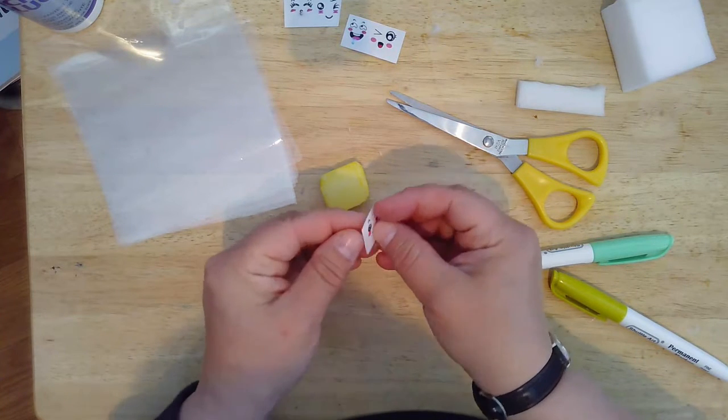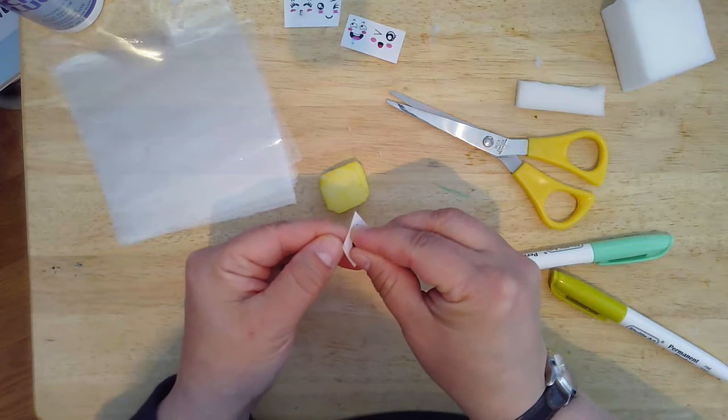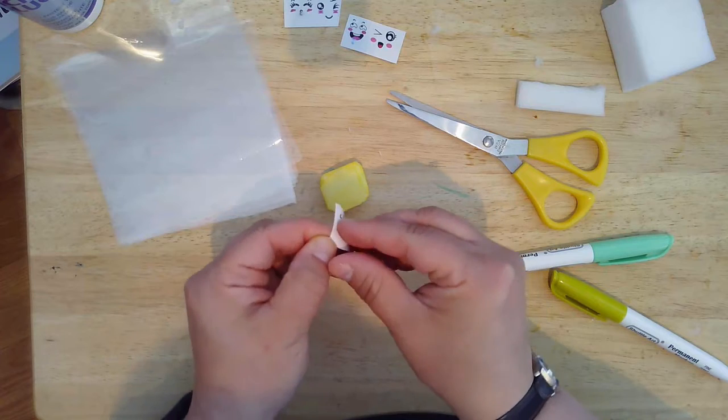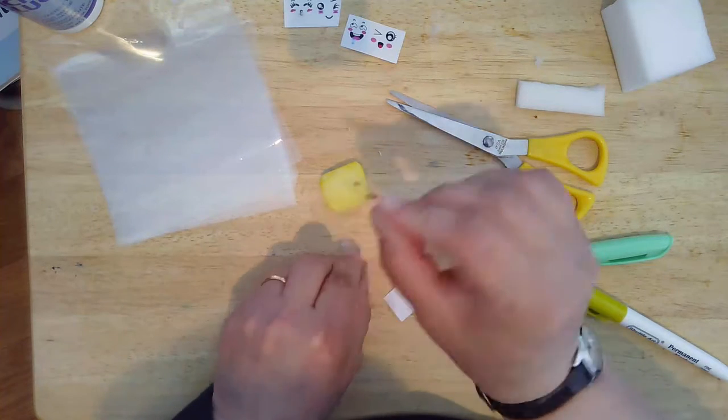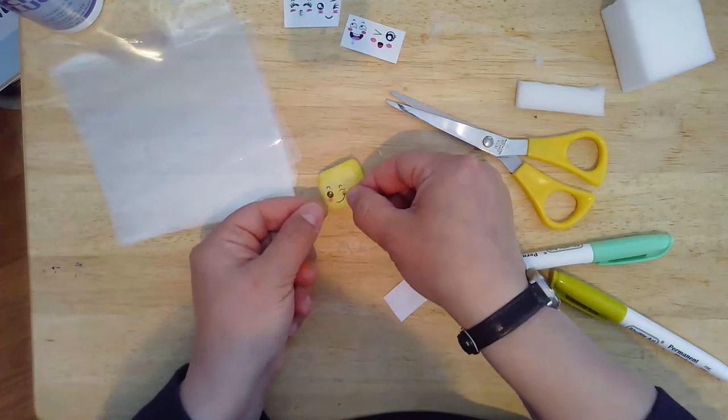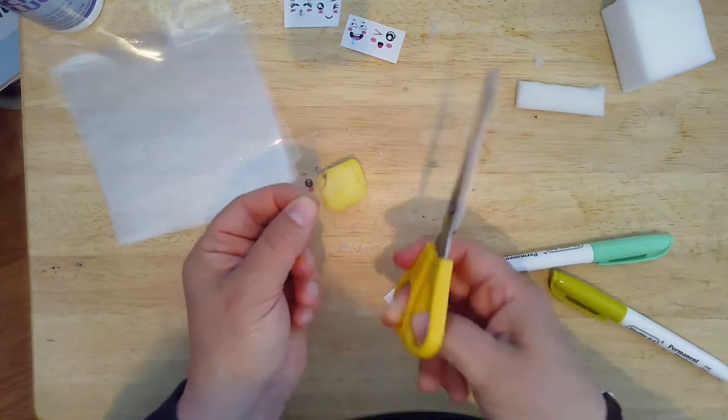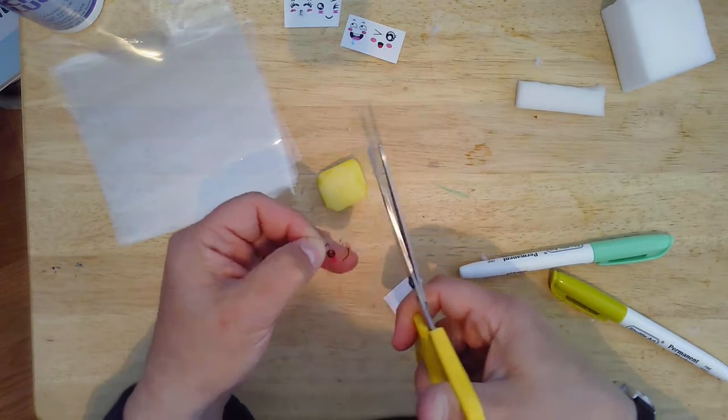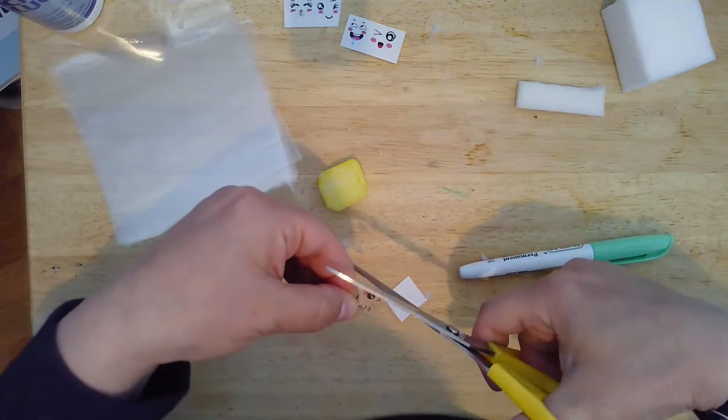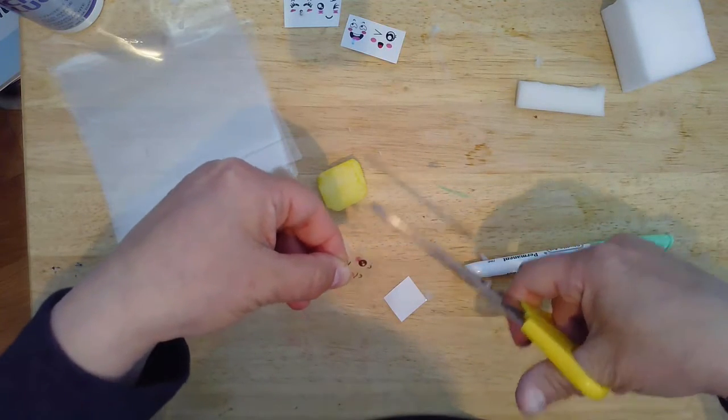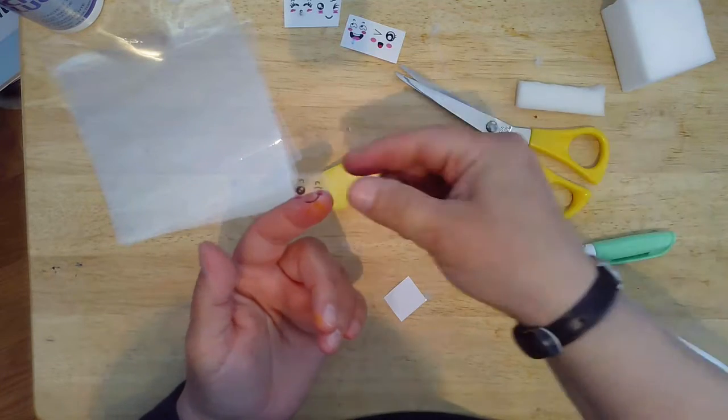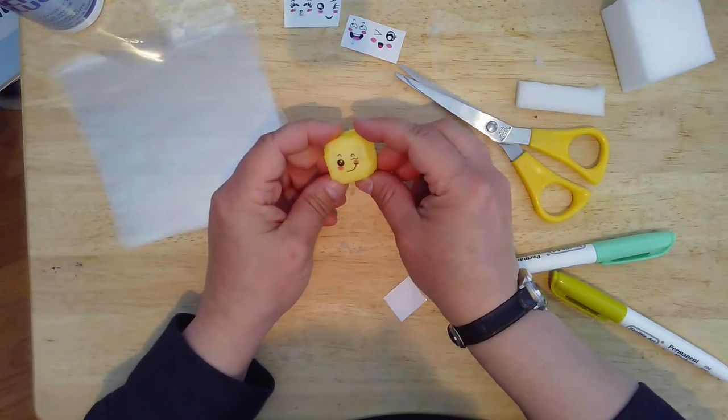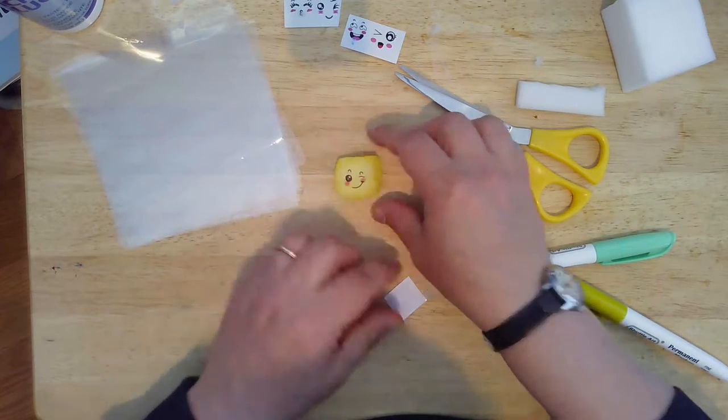So I might have to trim it to make sure it fits. I'm going to peel the backing away. It's a little tricky if you don't have fingernails. There we go. So I'm going to take my scissors and just adjust the edges a little bit and trim it up, then put it on the front of my foam piece. Looks good. All right.